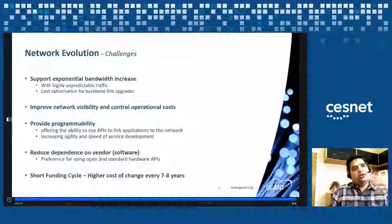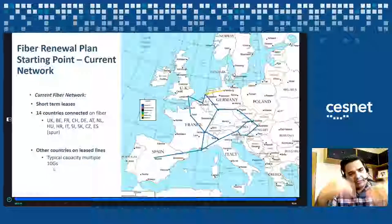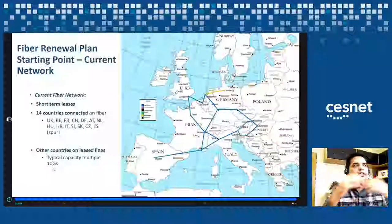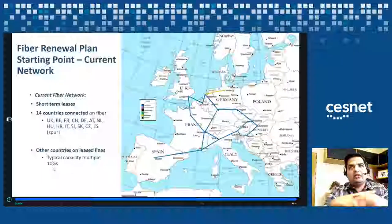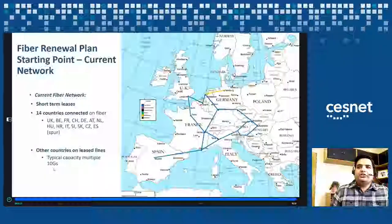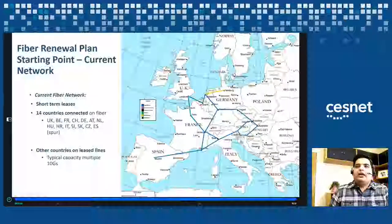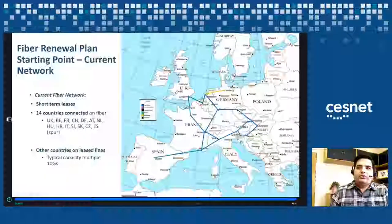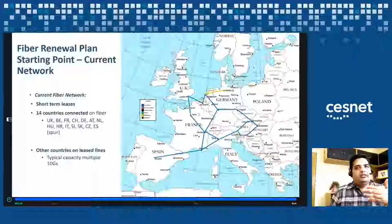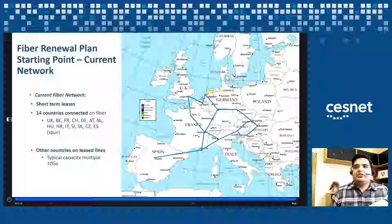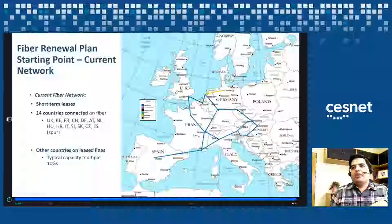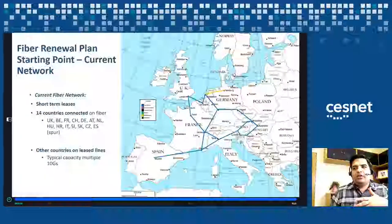I'm going to go through different layers of the network: fiber, then the line system, then the packet layer, and then the network management layer. Starting with the fiber network — this is the diagram of our current fiber network. These are short-term leases, about seven to eight to ten years. The blue links are our own procured fiber, where we use Infinera optical equipment. Currently 14 countries are connected on the fiber network. Czech Republic has two fiber links: one towards Frankfurt and one towards Bratislava, which goes on to Vienna and Budapest.